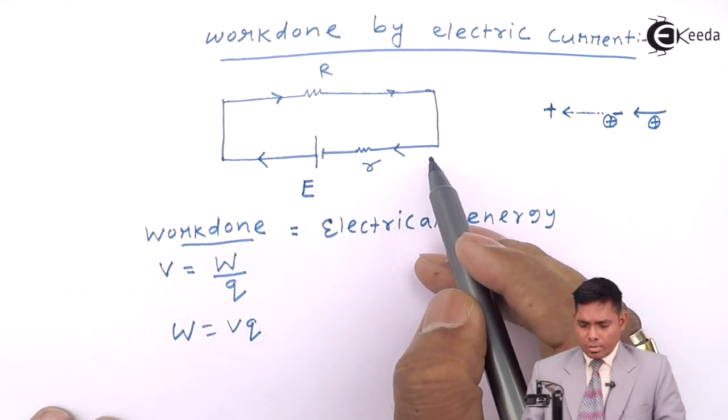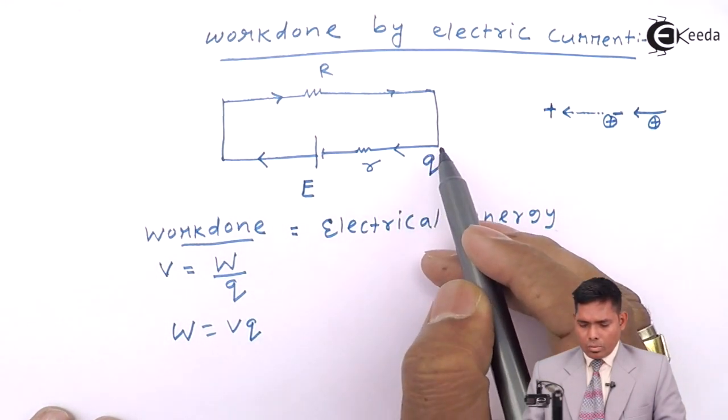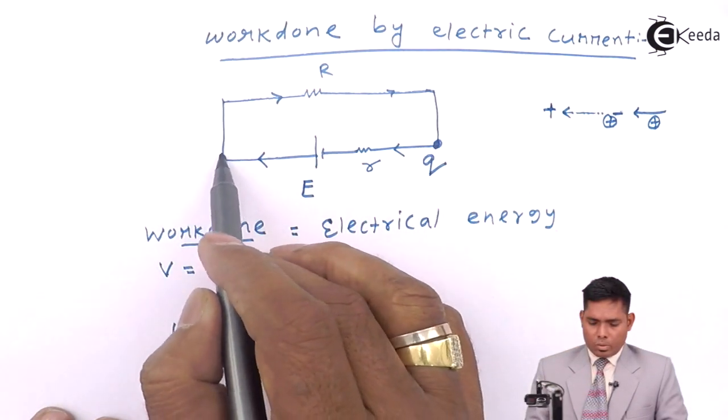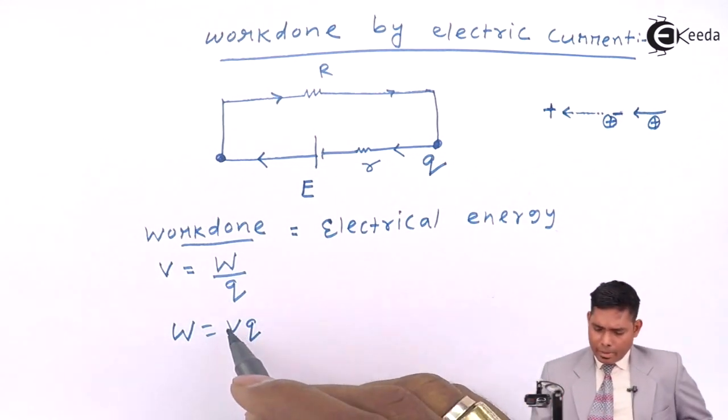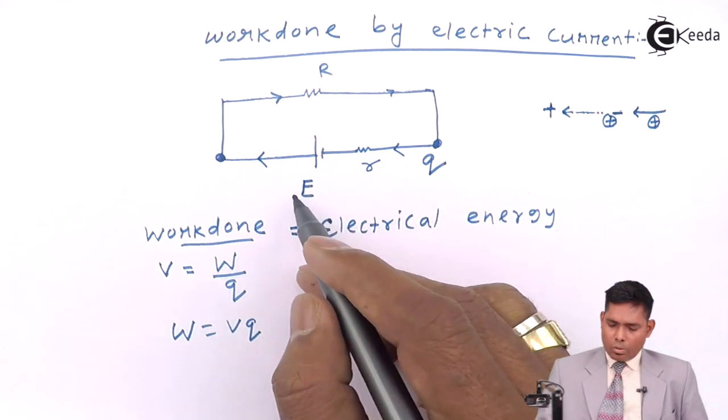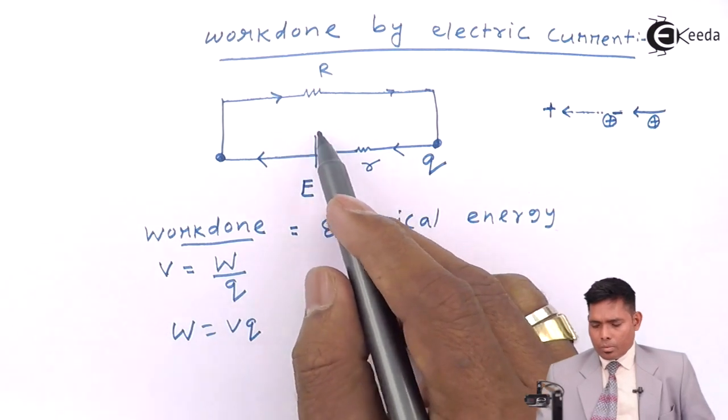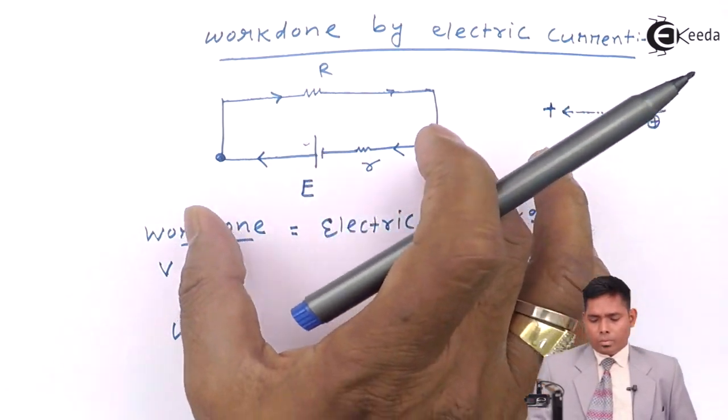If Q charge flows from one end to the other end, the work done by the battery is Q into the voltage of the battery.